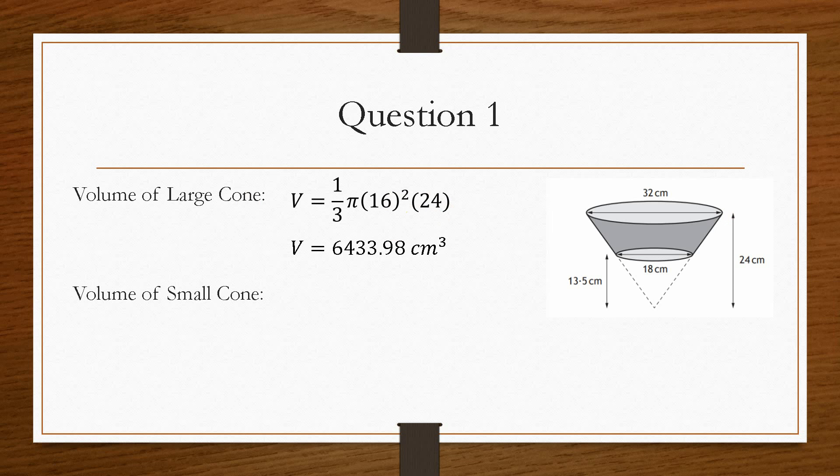Now, if we find the volume of the small cone, then that's this cone here. Then we have, we're going to use exactly the same formula, but this time, rather than having our radius as 16, then we know the diameter here is 18, so our radius must be 9. So the 9 squared multiplied by the height, now the height of this cone is only 13.5 centimetres.